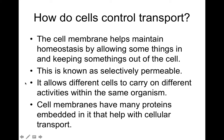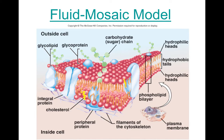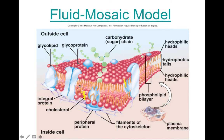Selective permeability allows different cells to carry on different activities within the same organism. Cell membranes have many proteins embedded in them that help with cellular transport. Here's a cutaway view of the cell membrane showing some of these structures. You can see those phospholipids in two layers — this is why we call it a phospholipid bilayer. The heads are polar and love water, while the tails hate water, so they point inward toward each other with no water in that layer.